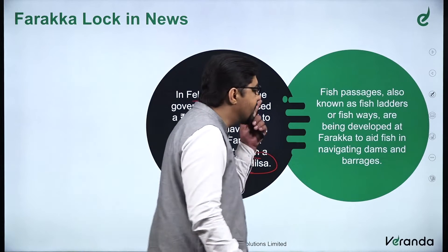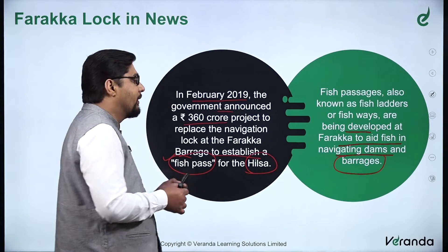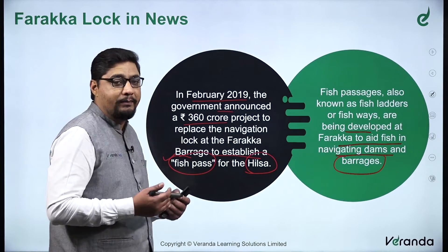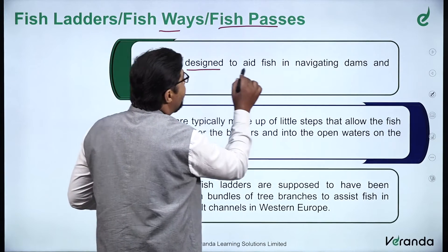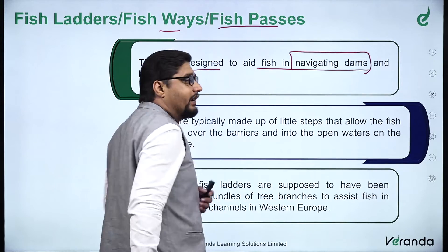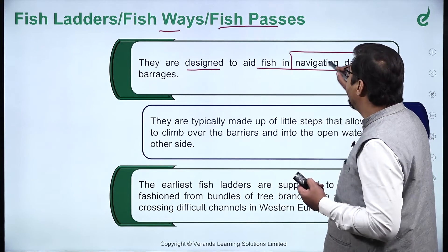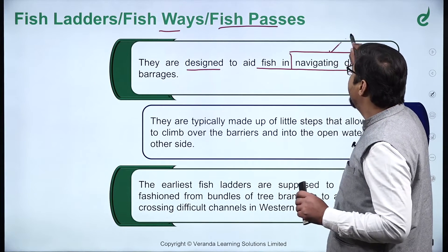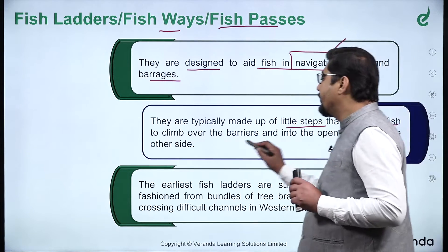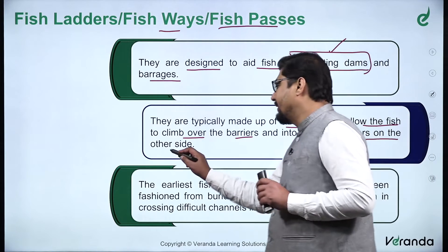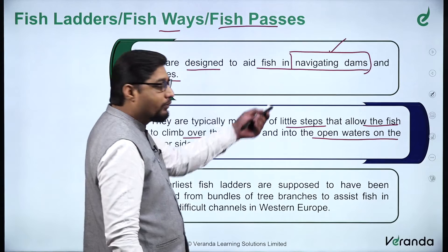Fish passages, also known as fish ladders or fishways, are being developed at Farakka to aid fish in navigating dams and barrages. The concept is simple: fish is travelling upstream, so you create a passage and give a pathway. Fish ladders are designed to aid fish in navigating dams. They are typically made of little steps that allow the fish to climb over the barriers and into the open waters on the other side — slowly climbing and passing on to the other side.